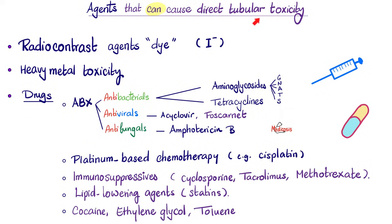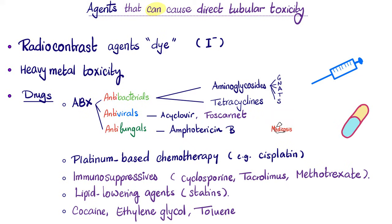What toxins can destroy the tubules? Radiocontrast agents like iodine in contrast CT. Heavy metal poisoning like mercury, lead, and others. Many medications including antimicrobials: antibacterials — the aminoglycosides (gentamicin, neomycin, amikacin, tobramycin, streptomycin); the tetracyclines (tetracycline, doxycycline, minocycline); antivirals like acyclovir and foscarnet; and antifungals like amphotericin B.